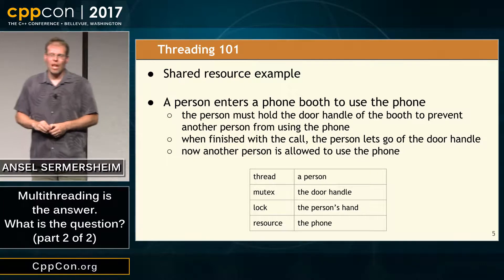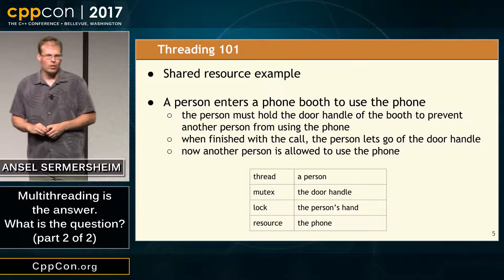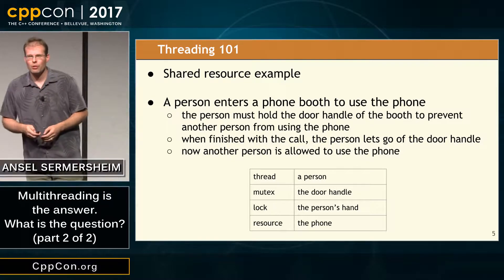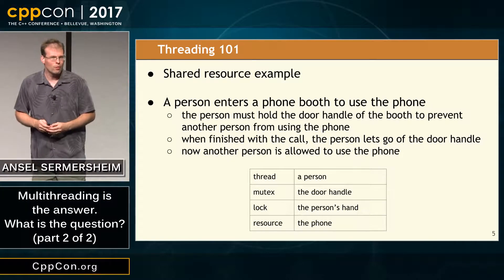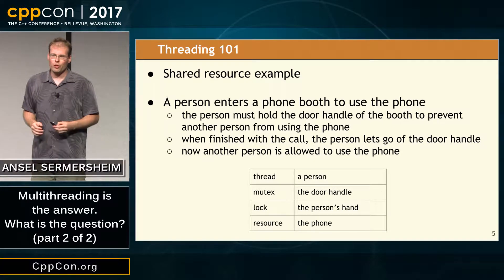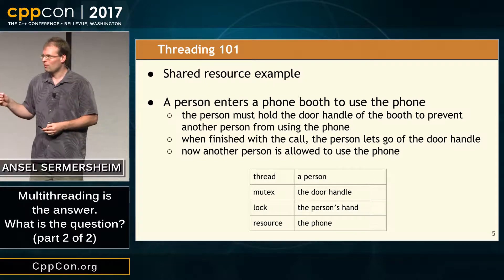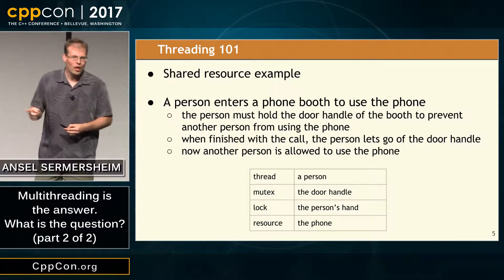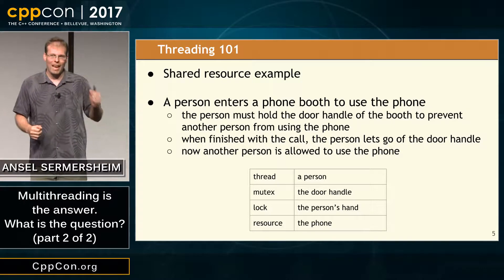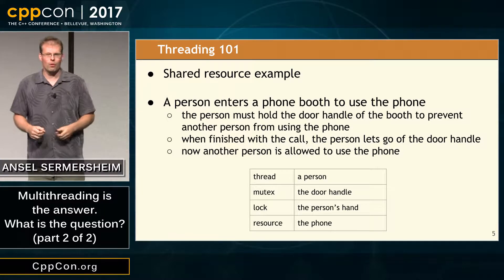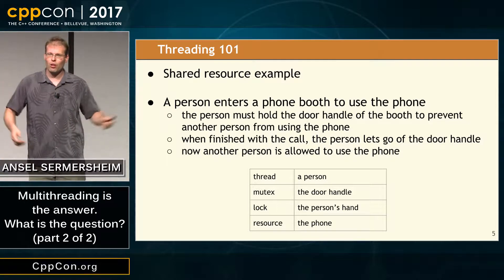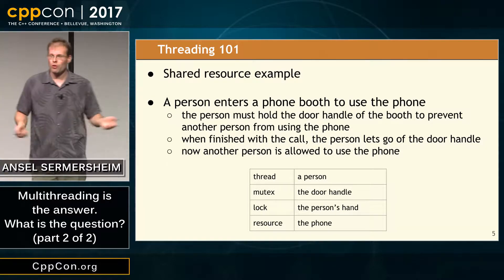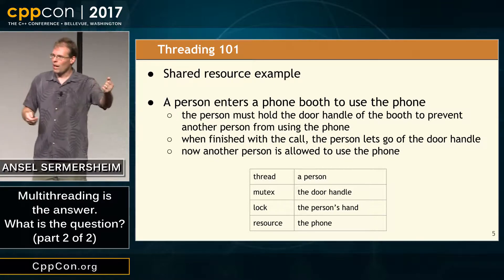Let's first look at how we handle shared resources in C++11. Say we have a phone booth — if you can find one, only one person can use the phone at once. So we make a rule: in order to use the phone, you must be holding the door handle of the phone booth. Only one person can hold it, and when you're finished with the call, you let go. The next person can come in. We're using the door handle as a mutex — if my hand is on this, you can't use this other object.